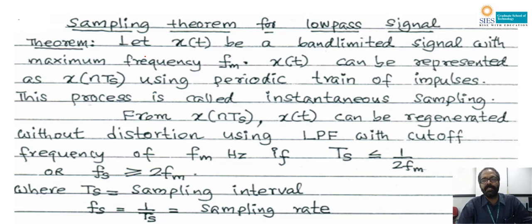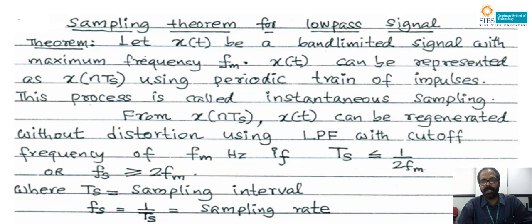From x(nTs), x(t) can be regenerated — that is, at the receiving side, from this sampled signal, x(t) can be regenerated without any distortion using an LPF with cutoff frequency fm Hz, where fm is the maximum frequency of the input signal. The condition is: fs should be greater than or equal to twice fm. That means the number of samples taken per second should be greater than or equal to twice the maximum frequency of the input signal. Here fs is the sampling frequency and Ts = 1/fs is the sampling interval.